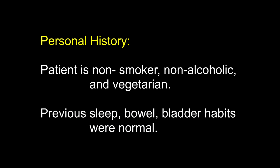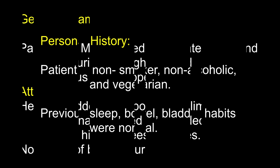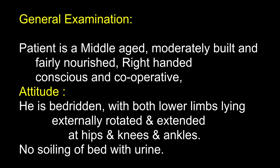Personal history: the patient is a non-smoker, non-alcoholic, vegetarian. Previous sleep, bowel, and bladder habits were normal. On general examination, the patient is middle-aged, moderately built, fairly nourished, conscious and cooperative, and right-handed. Attitude: he is bedridden with both lower limbs lying externally rotated and extended at the hips, knees and ankles. What does this attitude suggest? This may be paraplegia in extension or flaccid, that is a lower motor neuron type of paraplegia. I will have to check the tone to differentiate.